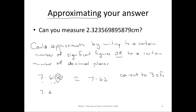Let's do it again, this time correct to three decimal places. We look at the numbers after the decimal point: 1, 2, 3 — then we look at the fourth one, which is 3. That's less than halfway, so we round down. So it would be 7.618. It's not a hugely different number — it's going to be round about what you're talking about.